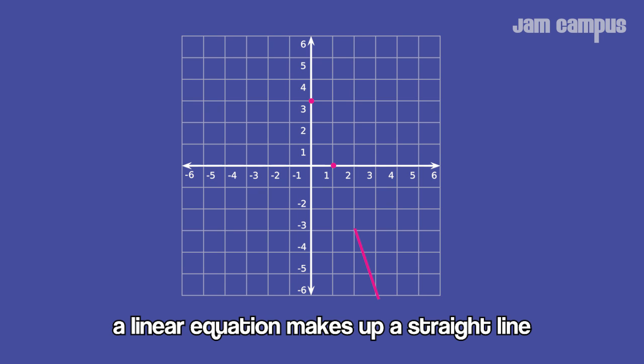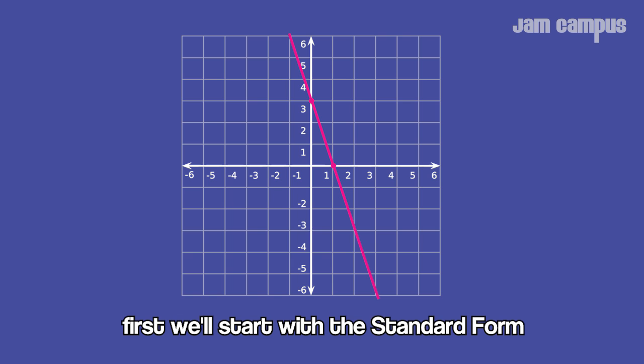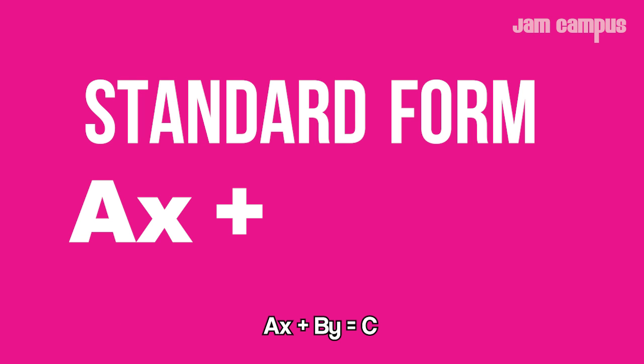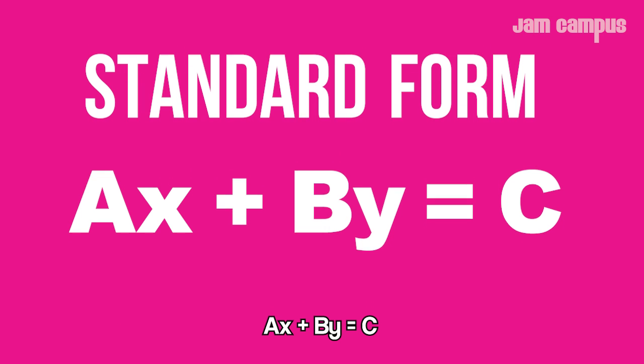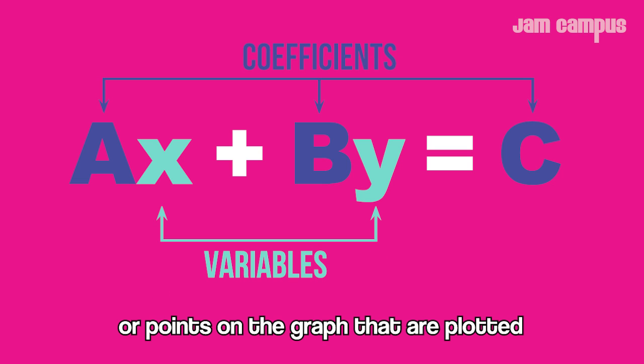A linear equation makes up a straight line on coordinates when graphing. First, we'll start with the standard form: Ax + By = C. A, B, and C are coefficients; x and y are variables or points on the graph to be plotted.